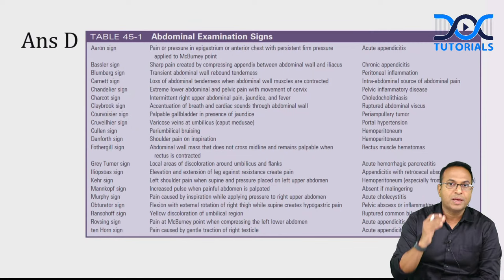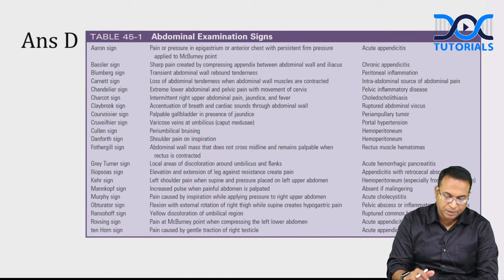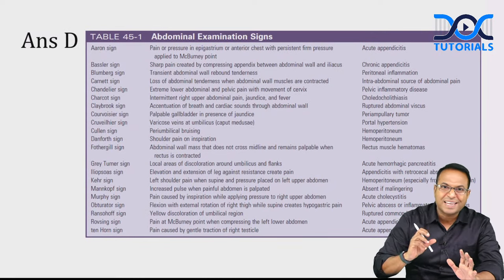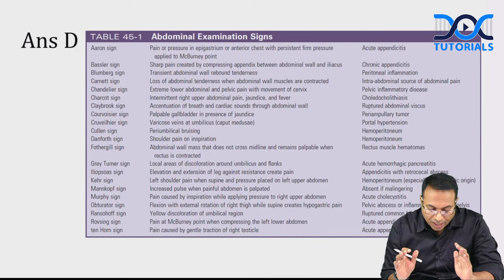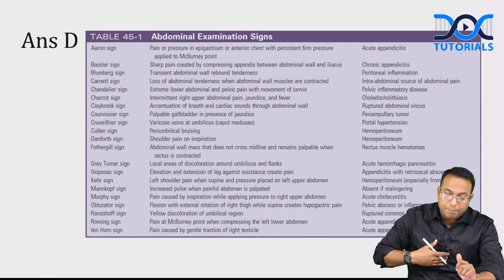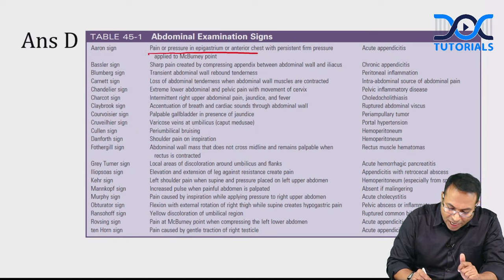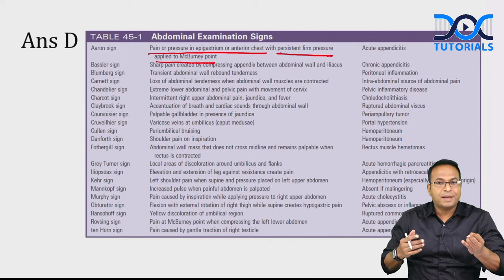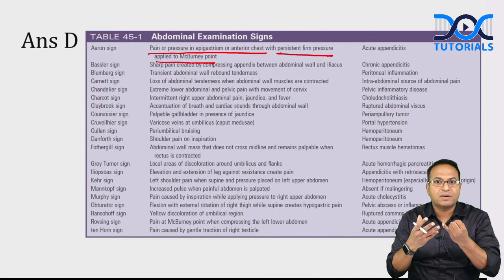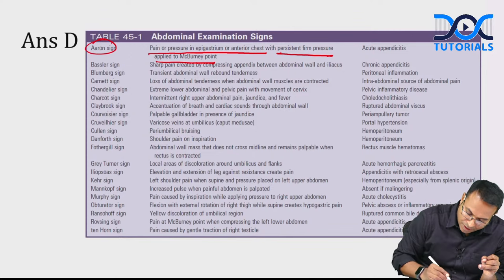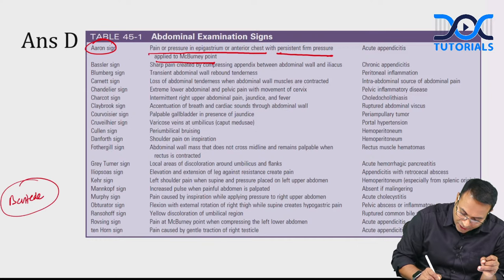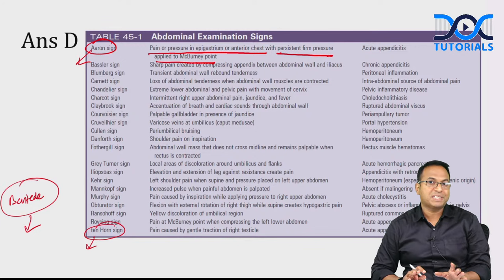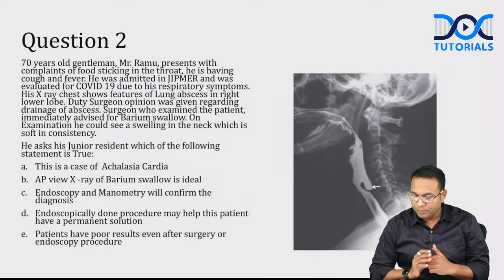Bestidi sign is pushing gas in the rectum causing right iliac fossa pain. Aron's sign is pain in the epigastrium when compressing McBurney's point. Ten-horn sign is pulling the testis. These three signs — Aron, Bestidi, Ten-horn — are no longer advised as they cause discomfort. All questions in this chapter are clinical questions suitable for INI-CET.